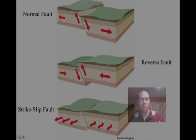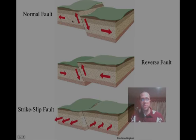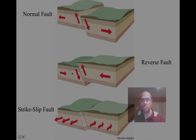A normal fault — the footwall is on the left, and the hanging wall is over here because it's hanging up on that surface. We're at a divergent boundary, so they're going to move outwards and it's going to drop down in comparison to the footwall. On the next one, we have a reverse fault, and they're being pushed together, so it's a convergent boundary, and the hanging wall is then going to be pushed up because of that fault line.